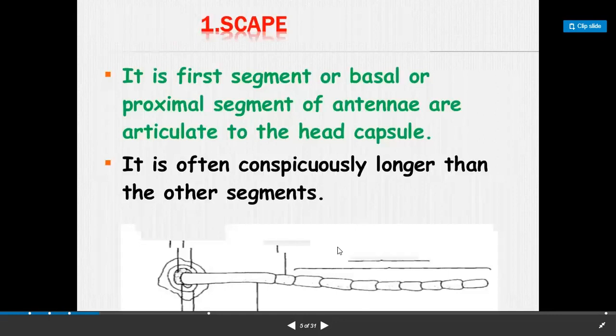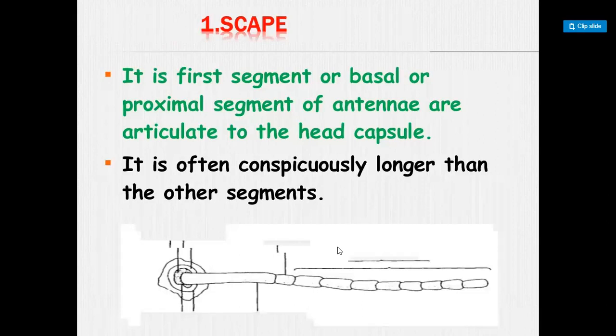The scape is the first segment, or basal or proximal segment of the antenna. It is articulated to the head capsule and is often considerably longer than the other segments.